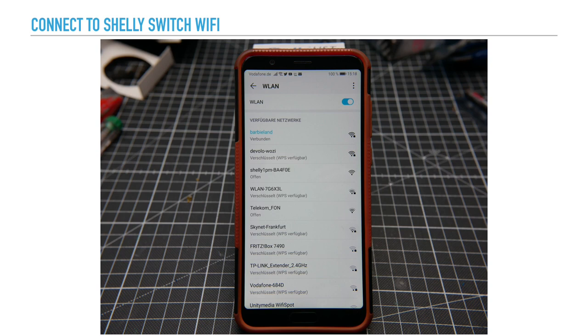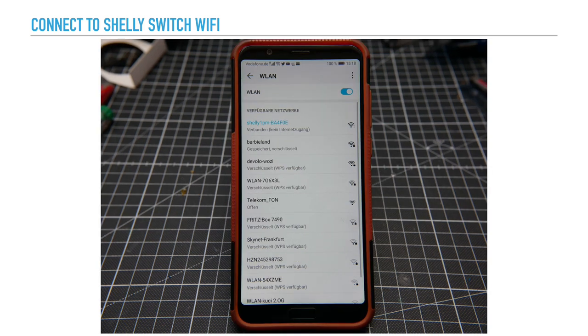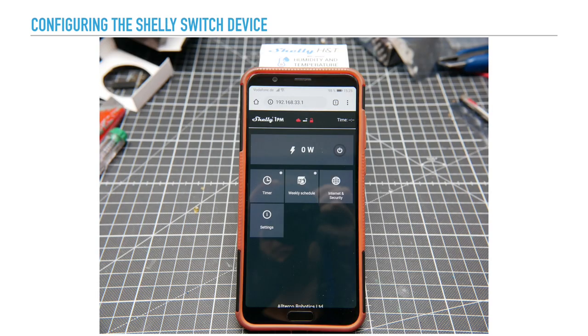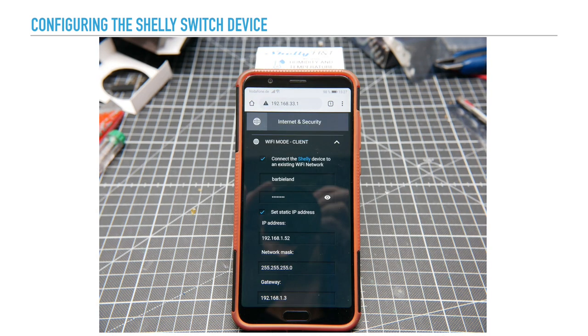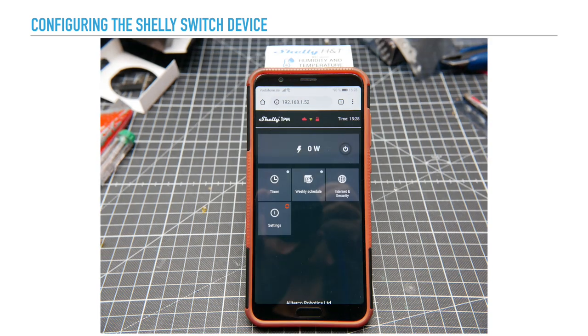And to set it up, you find the Shelly hotspot, which I have here and connected to this. And as soon as you connect it to the hotspot, you can browse to the IP 192.168.33.1. And there you have it. You have the web interface of the switch where you can set up your own Wi-Fi. It's the same procedure as you did before with the SUSI device. And then you can set also a specific IP, which I recommend. Here it's the IP 192.168.1.52, so I can create skills to this IP.